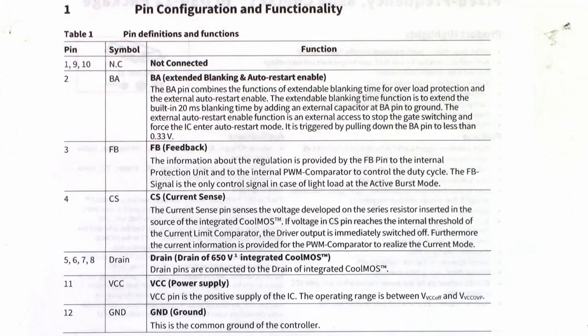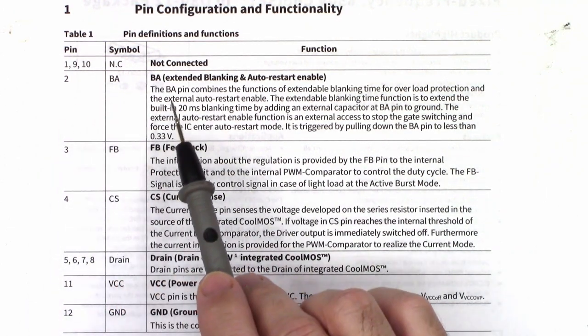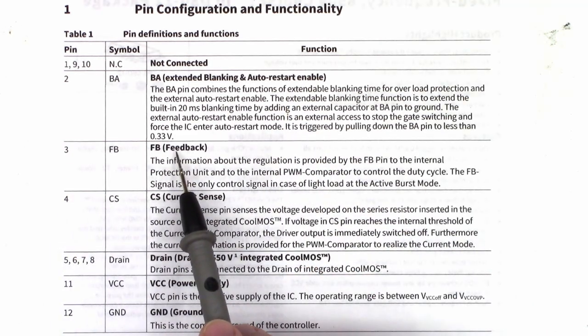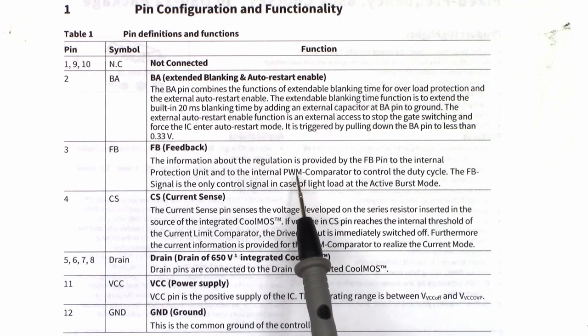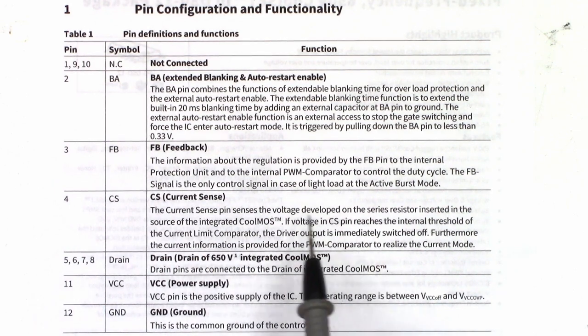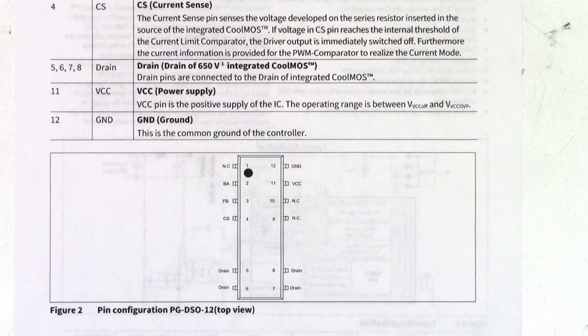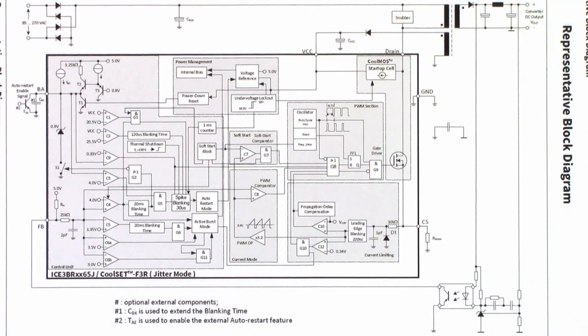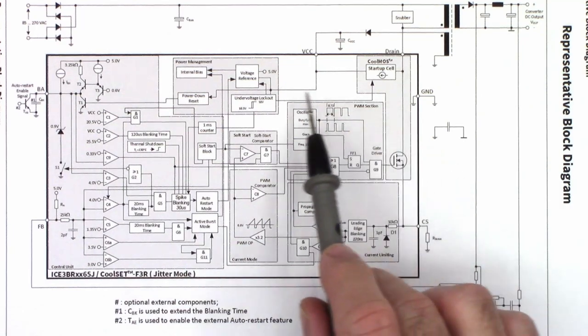On the back of this, here's a real quick rundown on the pins. Pin 2, extended blanking and auto restart enable. Pin 3 is the feedback pin from that optical isolator, which controls the pulse width modulation controller. Pin 4 is the current sense through that low value resistor to the drain to hot ground. It looks at the voltage across that resistor and limits how much power this thing can put out. Pins 5, 6, 7, 8, drain of 650 volt integrated cool moss. Pin 11 is the VCC power supply. The operating range is between VCC off and VCC over voltage protect. Pin 12 is ground.